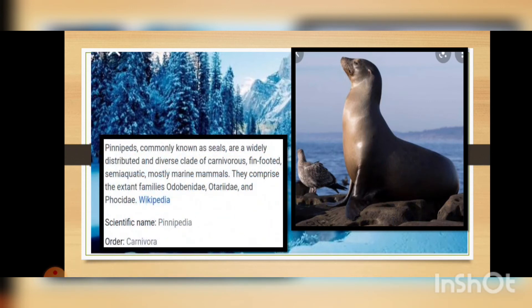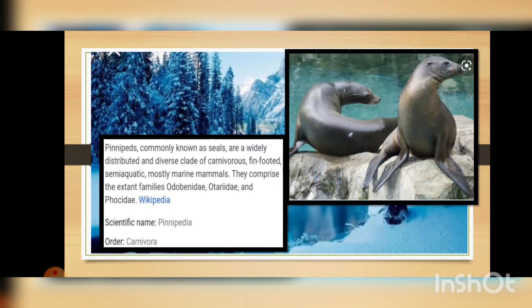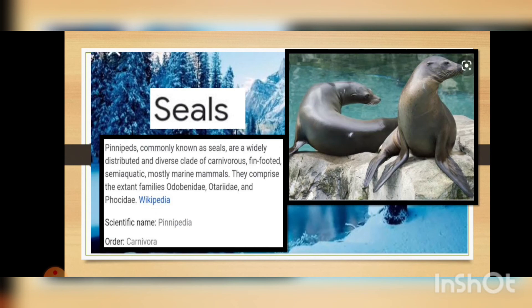Next we are coming to another animal which lives in the cold region — the seals, or pinnipeds. Pinnipeds, commonly known as seals, are a widely distributed and diverse clade of carnivores — fin-footed, semi-aquatic, mostly marine mammals. They comprise the extant families Odobenidae, Otariidae, and Phocidae. The seals and walrus actually come from almost the same families. The scientific name is Pinnipedia and the order is Carnivora.